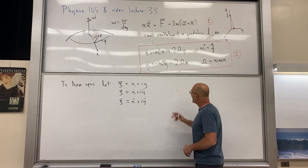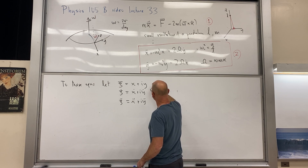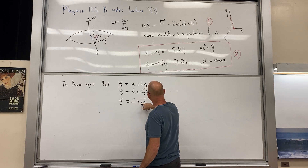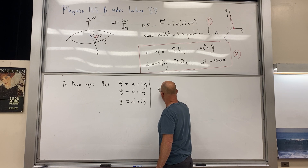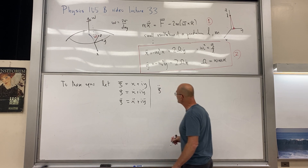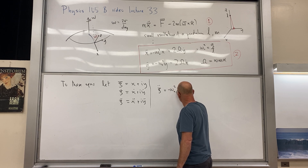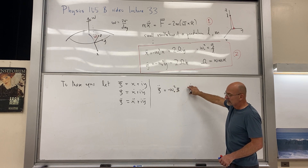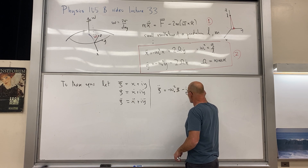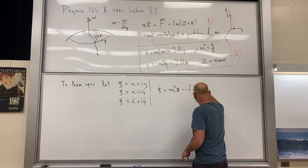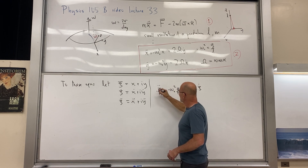Adding x-double-dot plus i·y-double-dot gives c-double-dot on the left side. On the right, we get minus omega-naught-squared·c, and for the mixed coupling terms we get minus i times 2·Omega·c-dot. So the first equation plus i times the second equation leads to: c-double-dot plus 2i·Omega·c-dot plus omega-naught-squared·c equals zero.